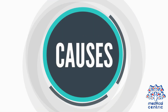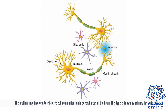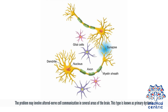The exact cause of dystonia is not known. It seems to be a neurological disorder related to a problem in the basal ganglia, the part of the brain responsible for creating muscle contractions. The problem may involve altered nerve cell communication in several areas of the brain. This type is known as primary dystonia, and some forms are inherited.